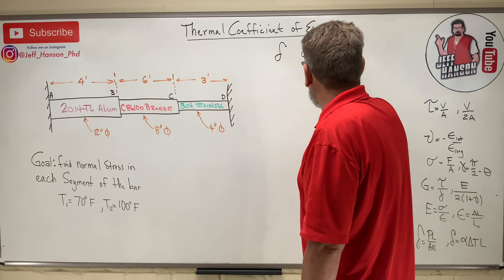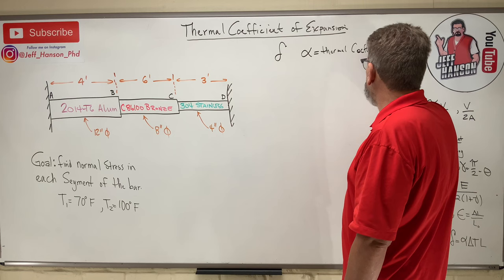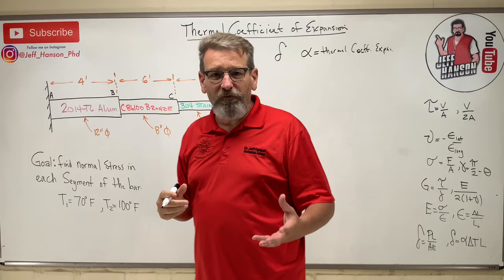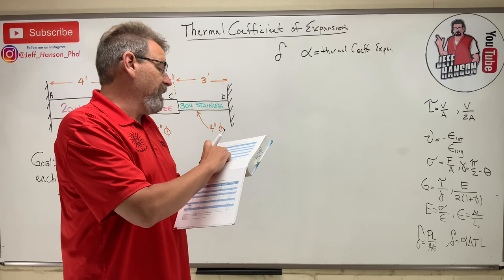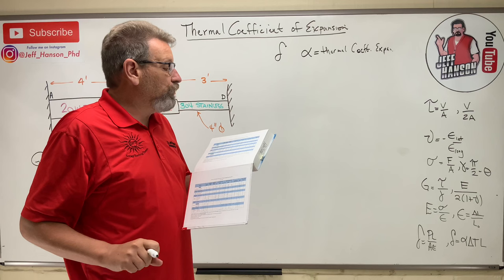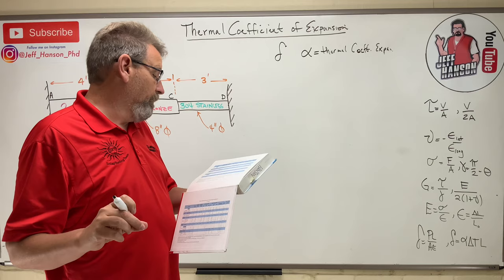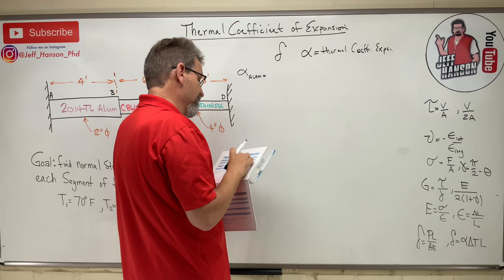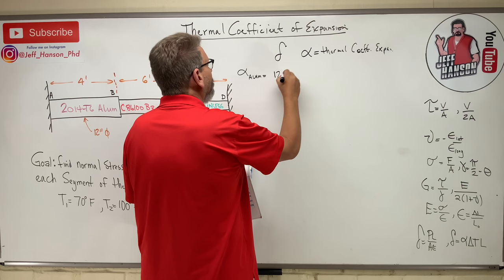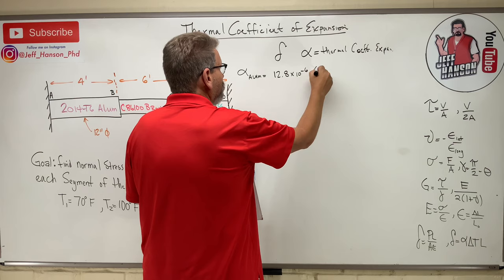The thermal coefficient of expansion is given by the letter alpha. That is a value we look up in the back of the book. If you have your material table, you flip that open to the very back page — we're very familiar with this table — and you just read across to the very last column. It tells you the thermal coefficient of expansion, and it's a very small number. For instance, for aluminum 2014-T6, alpha is 12.8 × 10⁻⁶ per degree F.